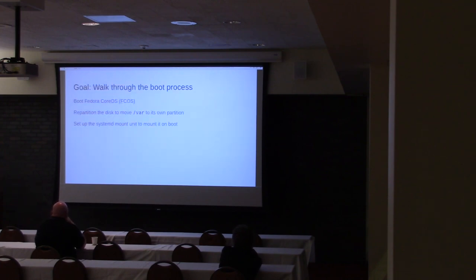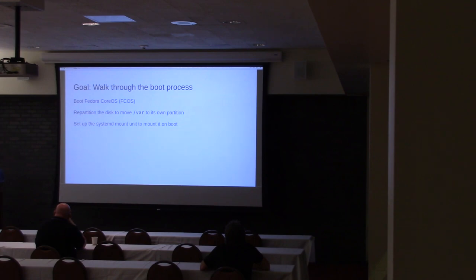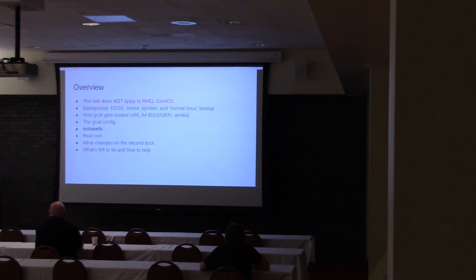In this talk, we're going to walk through the boot process. As an example, we're going to walk through the boot process where we configure slash var to be on a separate partition, and we'll set up a systemd mount unit to mount that on every boot. On Fedora CoreOS, the first boot is where we do all of our configuration, so booting and configuration are inherently tied together. Note: this does not apply to RHEL CoreOS — the boot processes are very similar but not the same.